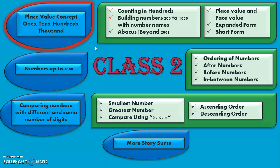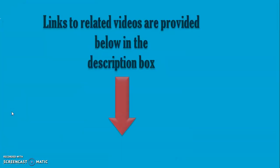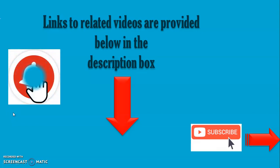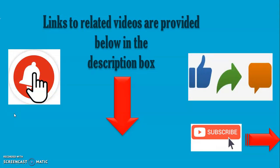Dear viewers, let us take a quick look at the learning outcomes in Class 2 under the concept of numbers. For place value concepts, I am sure you would have clearly understood how to count in 100s and build numbers from 200 to 1000 with their number names. The remaining topics — place value and face value concepts, writing numbers in expanded and short form — are covered in Part 2 of the video. The link will be provided in the description box below. All related concept videos are also linked there. If you have not subscribed to my channel, please hit the subscribe button and the bell button for regular updates. If you like the content, give a thumbs up and share the video. Leave your comments — both positive and negative — to help me improve. Thank you for watching.